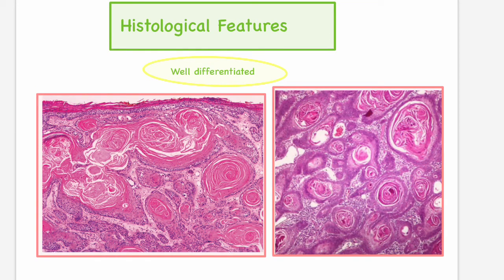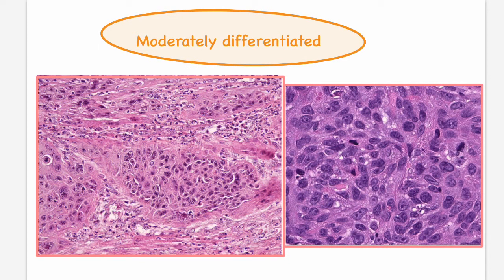The formation of keratin pearls forms the basis of grading of oral squamous cell carcinoma. Moving on to moderately differentiated SCC, also known as less well-differentiated SCC: here, the resemblance to squamous epithelium is reduced compared to well-differentiated SCC. Cellular pleomorphism will be more marked and mitotic figures will be more because it is progressing towards advanced malignancy. Keratin pearl formation is reduced compared to well-differentiated SCC.